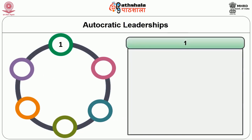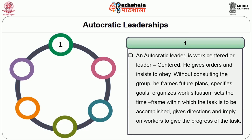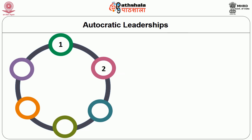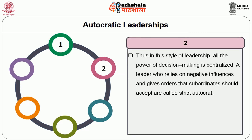Autocratic leadership: an autocratic leader is work-centred or leader-centred. He gives orders and insists they be obeyed. Without consulting the group, he frames future plans, specifies goals, organises the work situation, sets the timeframe within which the task is to be accomplished, gives directions, and follows up on workers to check the progress of the task. In this style of leadership, all the power of decision making is centralized — as you see in the picture, where A denotes the leader.